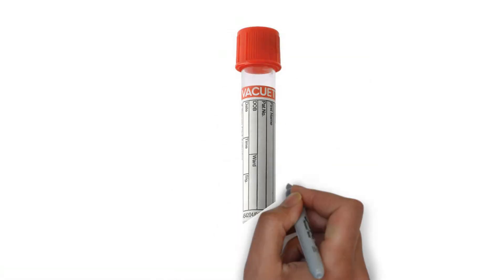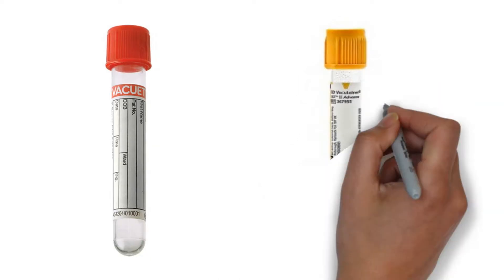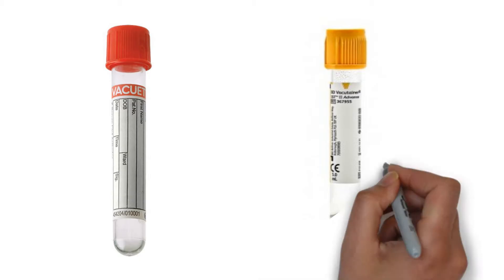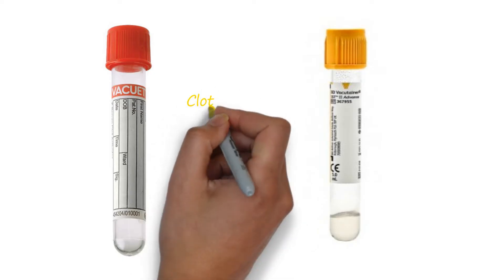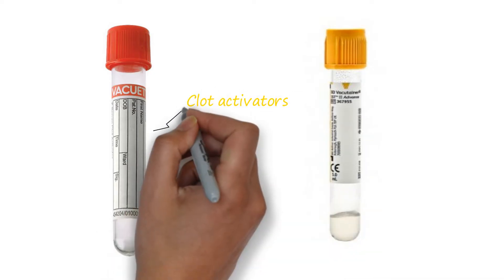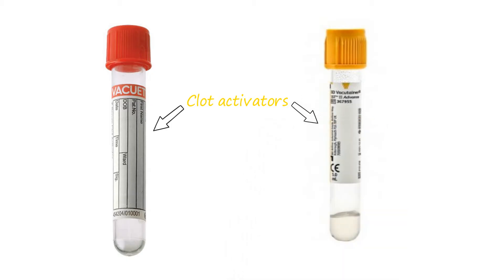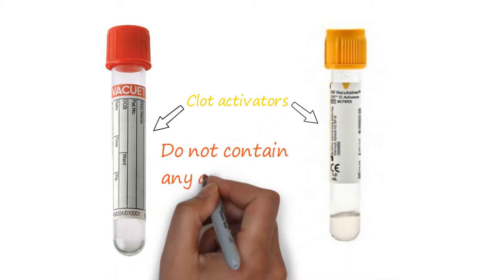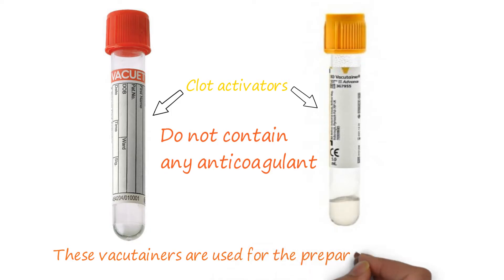Do you know any differences and similarities between the red top vacutainer and the gold top vacutainer, also known as the serum separator tube (SST)? Both vacutainers have a clot activator, meaning the clotting process is enhanced. Both do not contain any anticoagulant, and both are used for the preparation of serum.